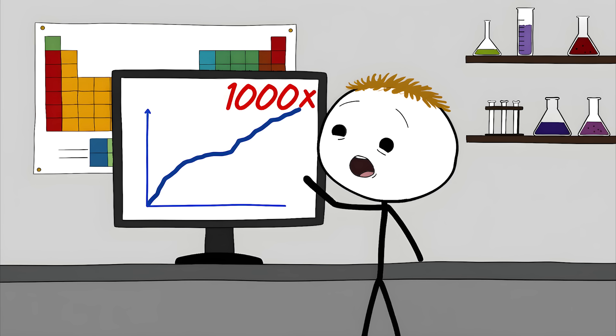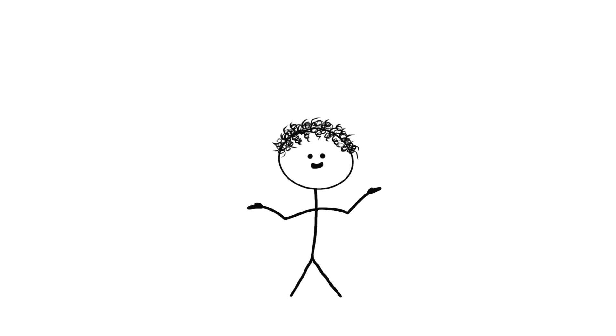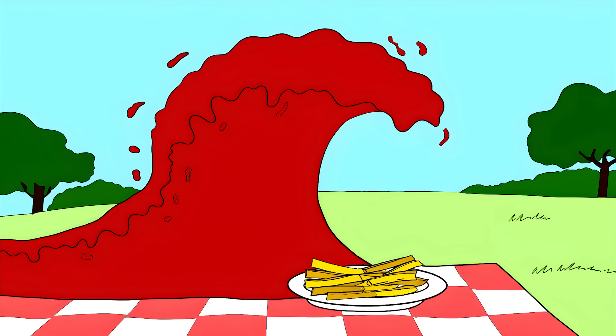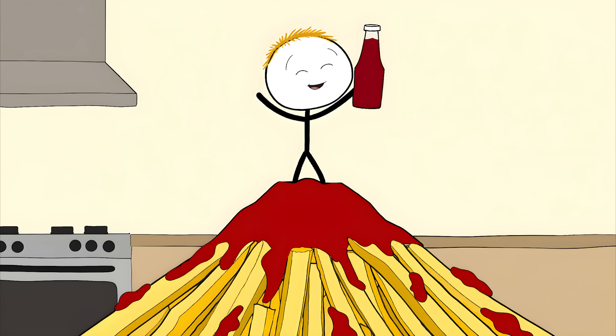Scientists found that shaken ketchup can flow up to 1,000 times more easily than when it's still. This is why one second you're desperately shaking the bottle and the next your fries are drowning in a red tsunami. You're literally changing the physical properties of matter just to make your French fries less boring.